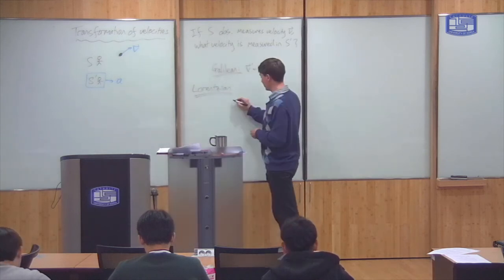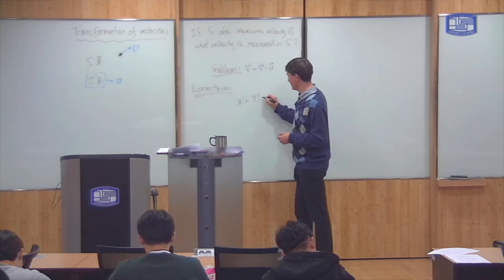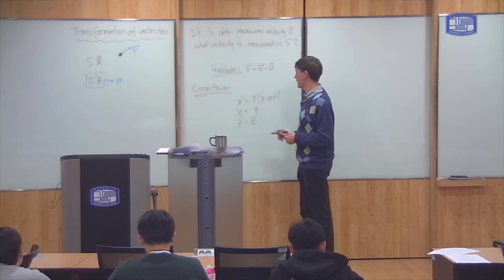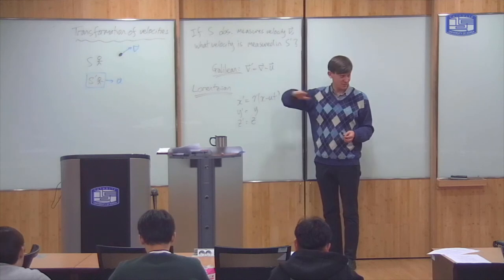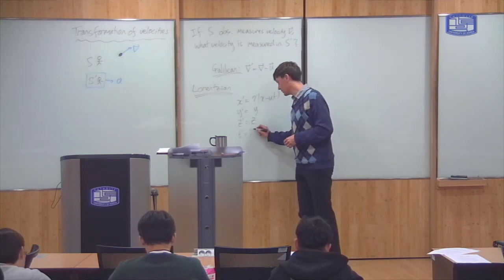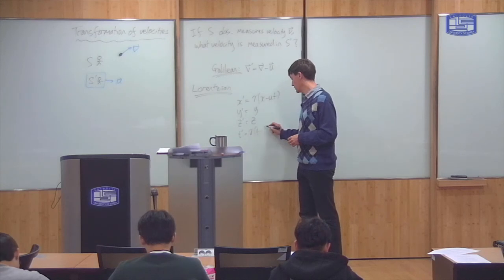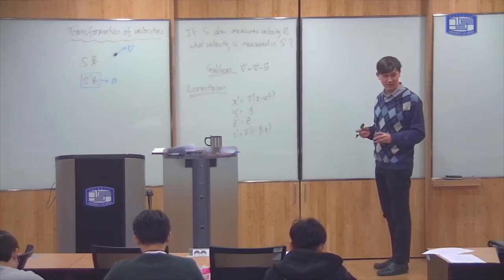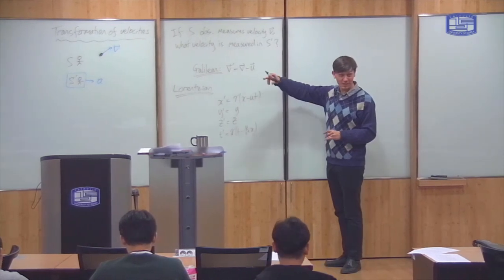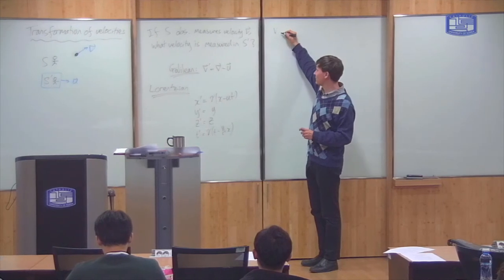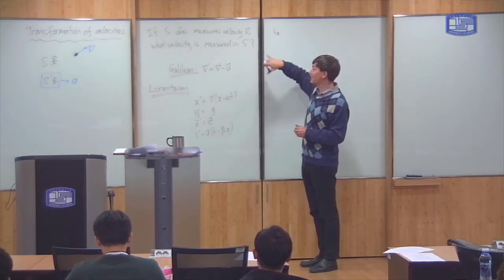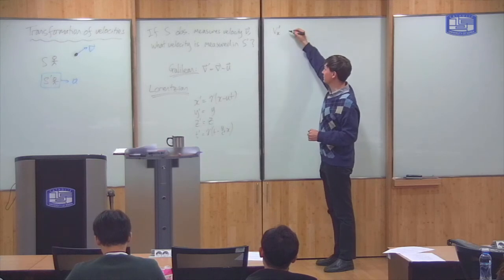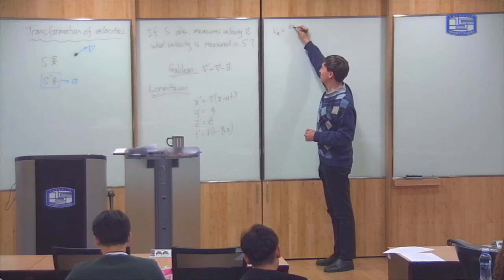Now we'll do the same thing with the Lorentz transformation. Just for reference, let me write up the Lorentz transformation again — this is particularly for the case where the U velocity is in the X direction. The x-component of velocity measured by S prime is what we want to find.